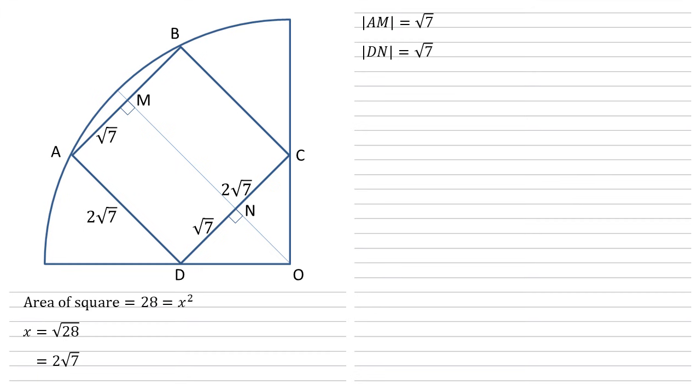Now we've got these, we can find out some of the lengths in the bottom right corner. If we look at the triangle DCO, we know it's a right angle because this is a quarter circle, so the angle DOC must be 90 degrees.